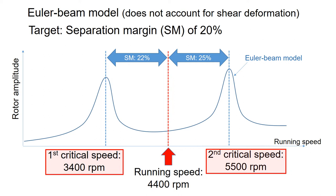By using the Euler beam model, your analysis shows that the first and second critical speeds are at 3,400 rpm and 5,500 rpm respectively. This translates to separation margins of 22% and 25% from the first and second critical speeds to your running speed, which satisfies the target separation margin of 20% or larger.